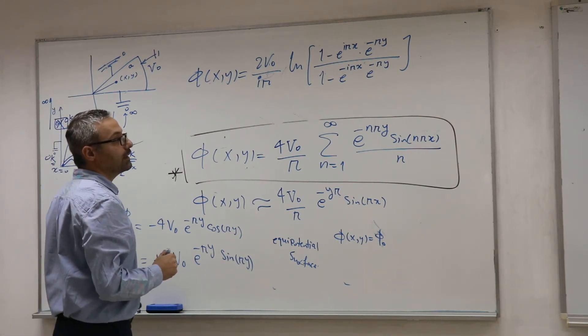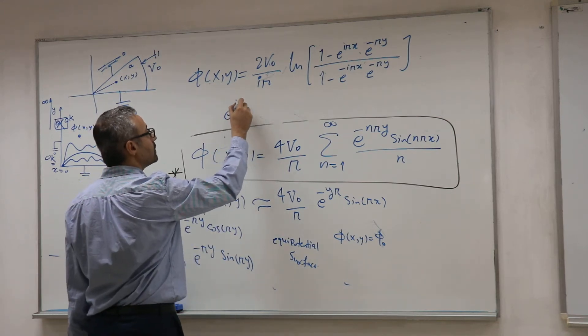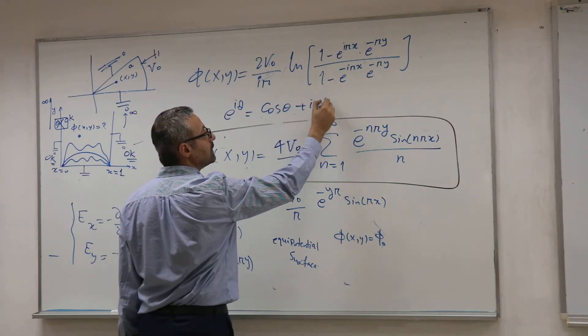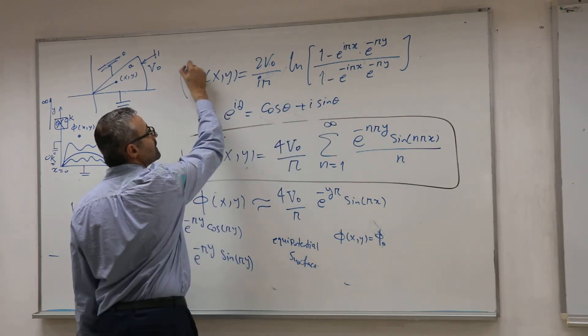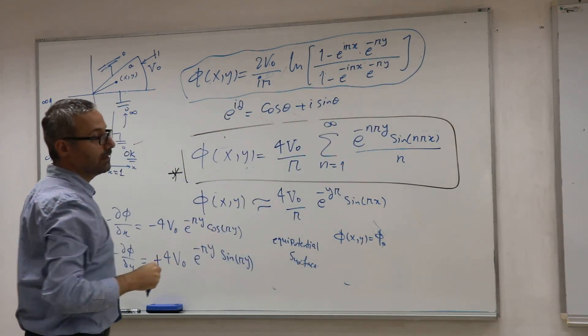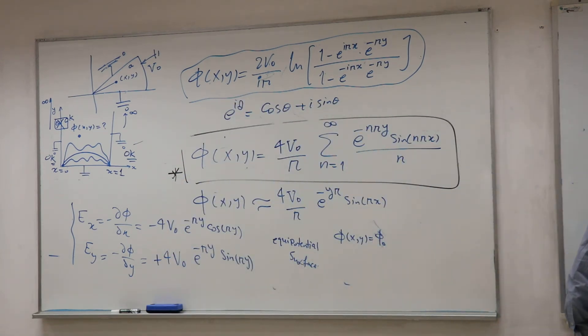If you want, you can use the definition. You can use this Euler equation. Instead of E^(iθ), you can write cosine plus i·sine and simplify it. But this equation, for me, is better than the other one.